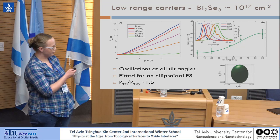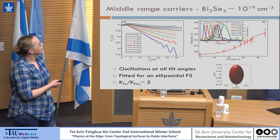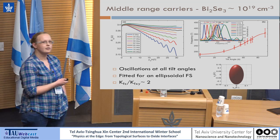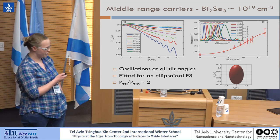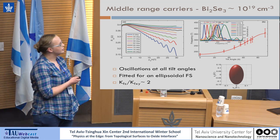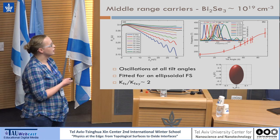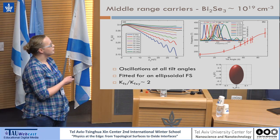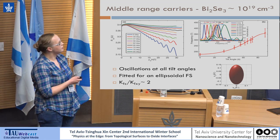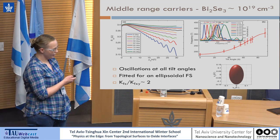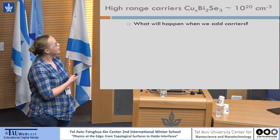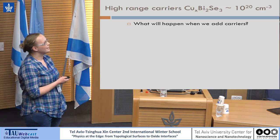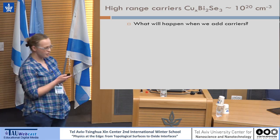At 10¹⁹ per cm³ — the middle range of bismuth selenide — measured up to 30 and 33 Tesla, we also observed a closed Fermi surface, slightly more elongated.